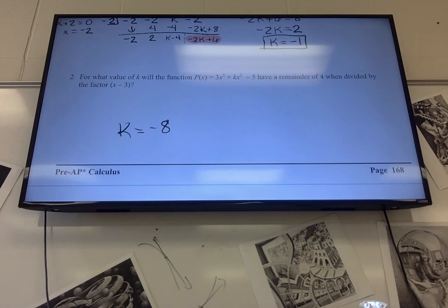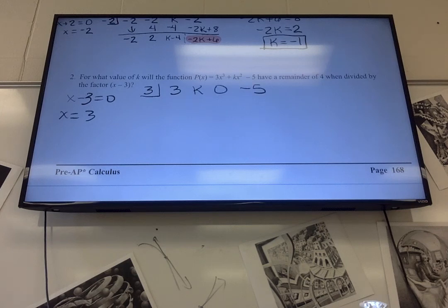Okay, I'm going to start. And if you're not done, that's okay. So I have x minus 3 equals 0. So x equals 3. So in the box, I put 3, and then 3, k, 0, and negative 5 because I don't have a 0x. I don't have an x, I should say.